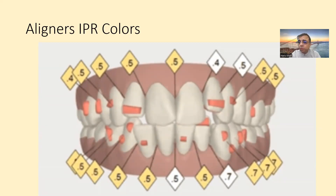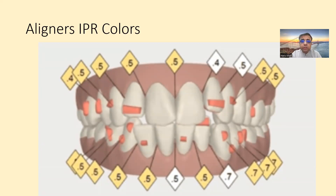Many candidates who do not know these color codings fail to solve these questions, or they think all the boxes are the same. If you see a case with yellow and white, the yellow means the IPR is being done now and the white means it will be done in the future.